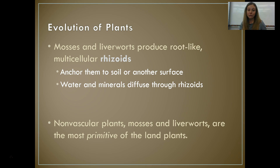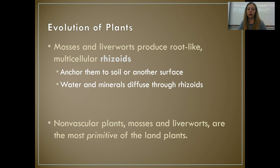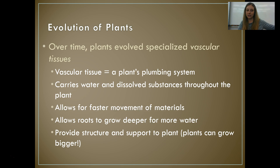Mosses and liverworts don't have true roots, but they do have root-like structures called rhizoids. Like roots, they anchor the plant to the soil or some sort of surface, and they allow water and minerals to diffuse through them. They require diffusion and osmosis, but they're not really specialized like roots are. Non-vascular plants — mosses and liverworts — are the most primitive of our land plants; they were the first to evolve from algae.